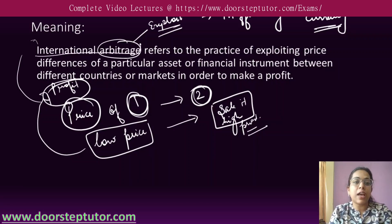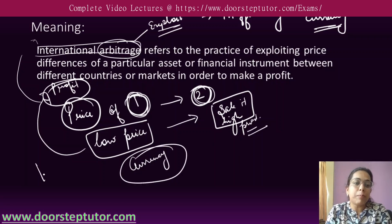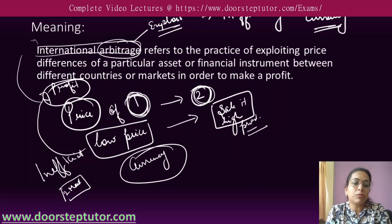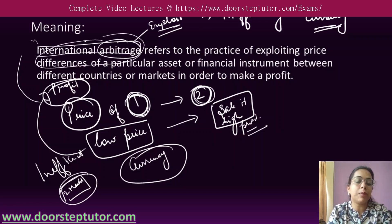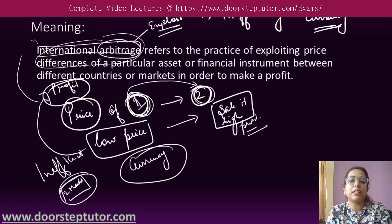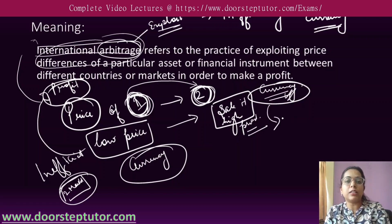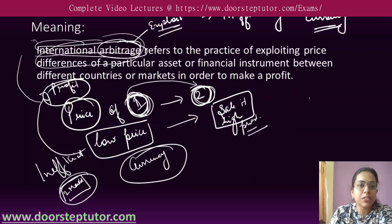International arbitrage refers to that process in which you do transactions involving different currencies. There is an inefficiency in two different markets where two different currencies are involved. The price of one identical product is low in one country and high in another, or there is a differentiation in the exchange rate of one currency across different countries or markets.